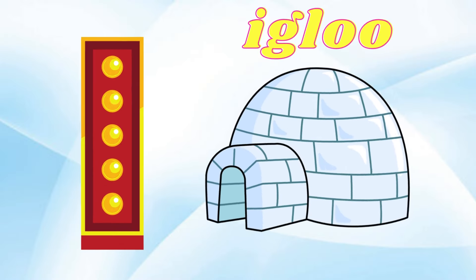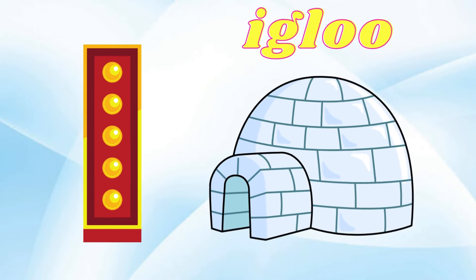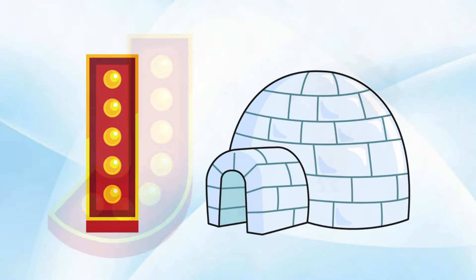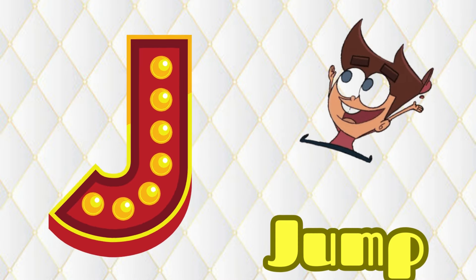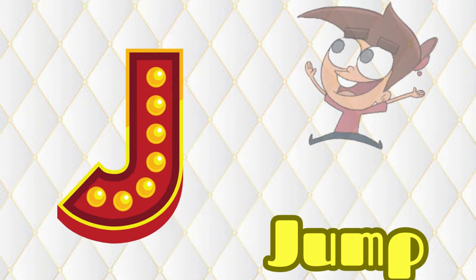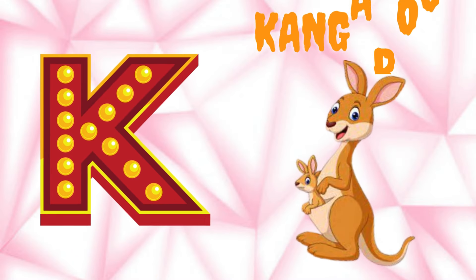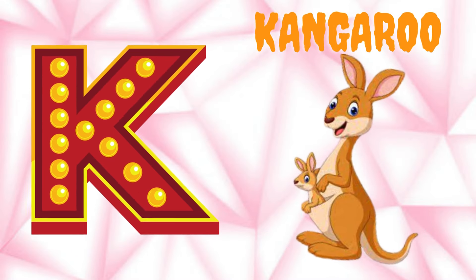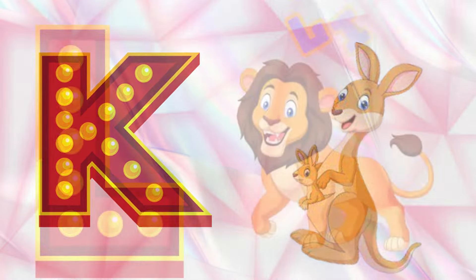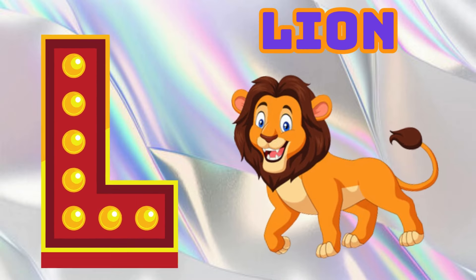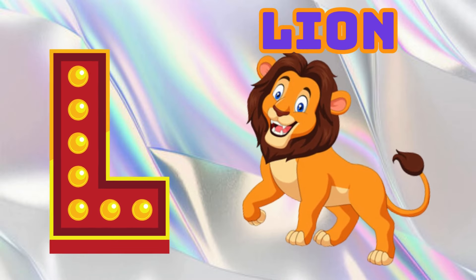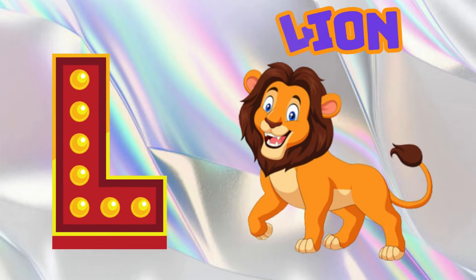I is for Igloo, I-I-Igloo. J is for Jump, J-J-Jump. K is for Kangaroo, K-K-Kangaroo. L is for Lion, L-L-Lion.